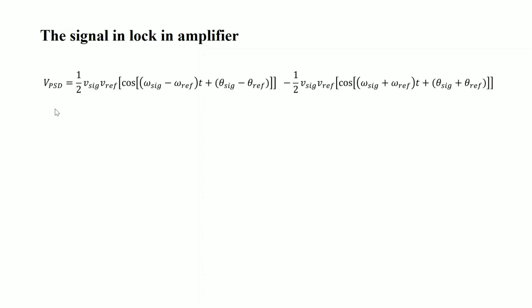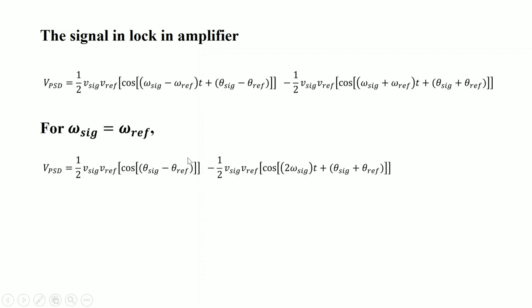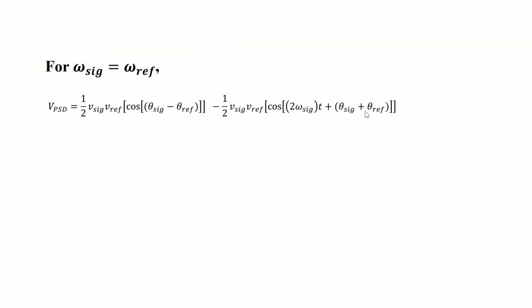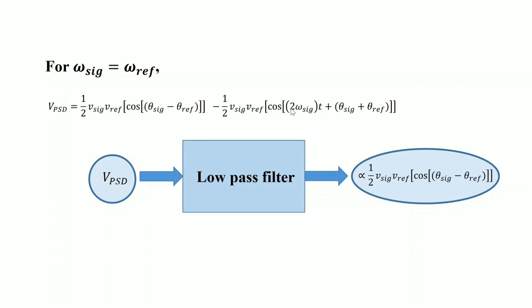Before going into that, let's go back and discuss how the lock-in amplifier measures signals. In the lock-in amplifier there is one input signal and one reference signal. The lock-in amplifier multiplies these two and gets a signal that has one low-frequency component and one high-frequency component. When the reference frequency and the signal frequency are the same, the mixed signal has one DC component and one AC component, where the AC component frequency is twice the reference frequency. This mixed signal passes through a low-pass filter to recover the input signal.